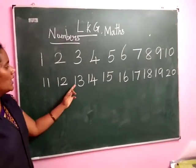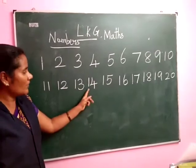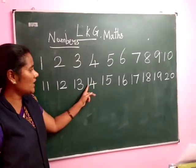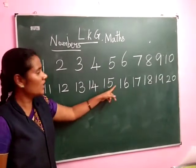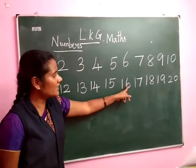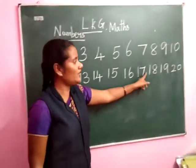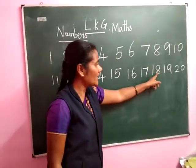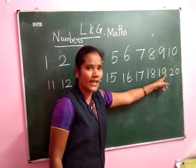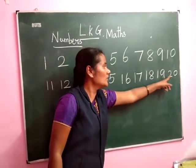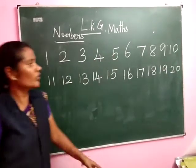1, 2 — 12. 1, 3 — 13. 1, 4 — 14. 1, 5 — 15. 1, 6 — 16. 1, 7 — 17. 1, 8 — 18. 1, 9 — 19. 2, 0 — 20. Okay.